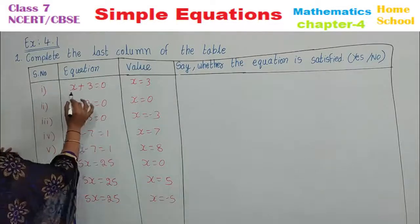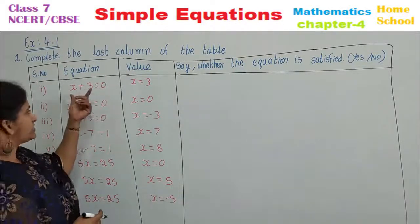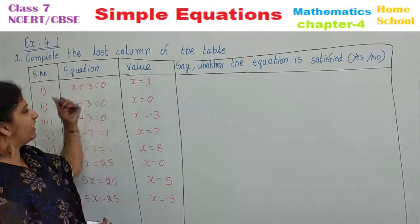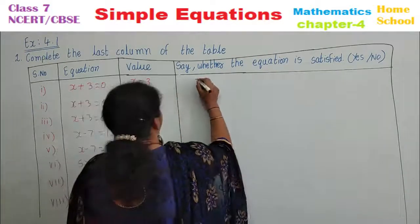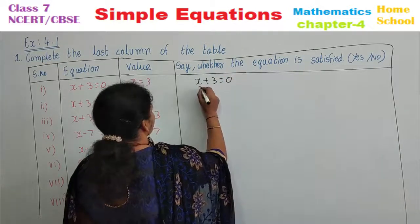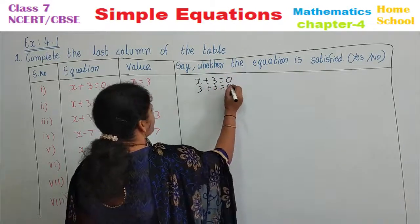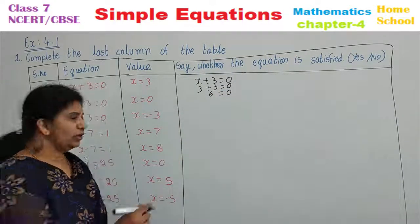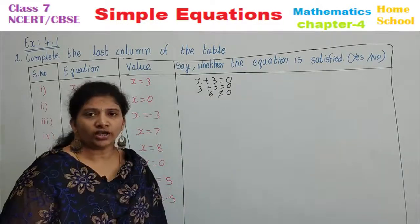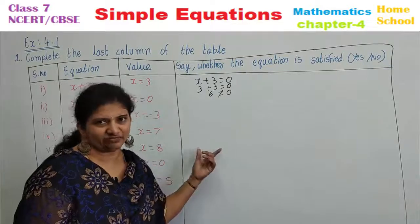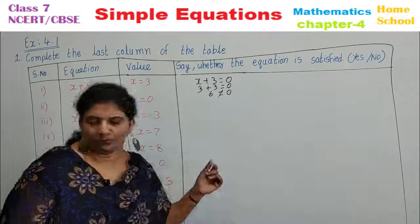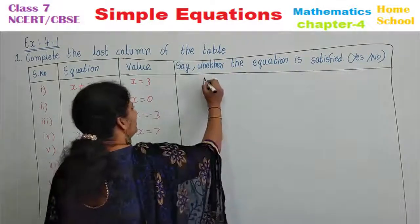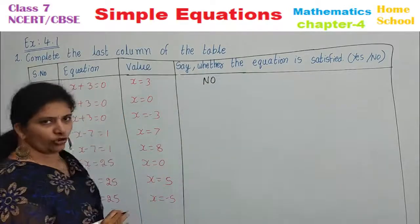See the first problem: x plus 3 equals 0, with value x equals 3. Substitute 3 in place of x: 3 plus 3 gives 6, and 6 is not equal to 0. They are not the same, so the equation is not satisfied. Write no.